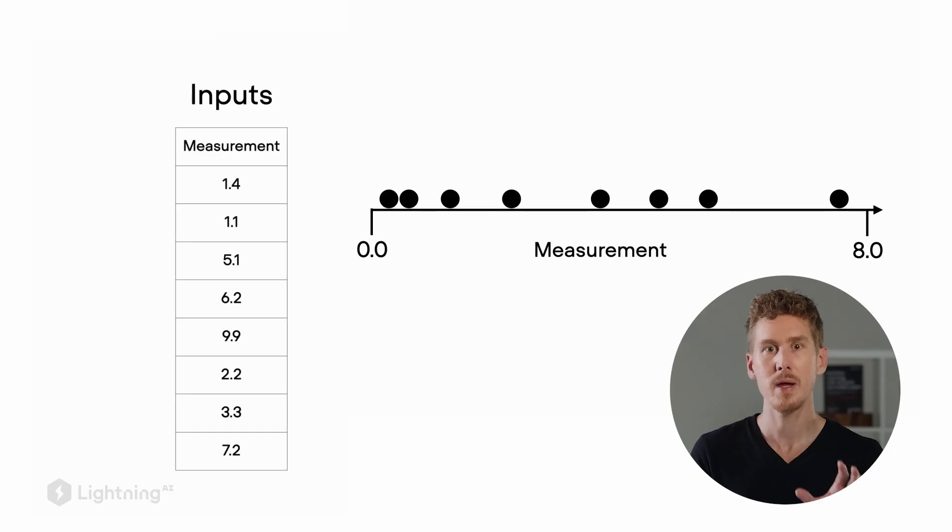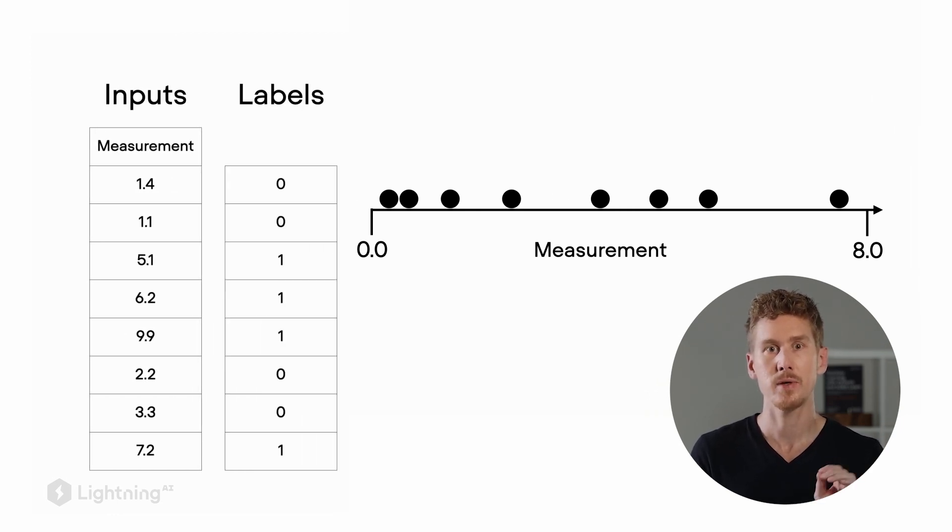So now let's return to the problem of binary classification for our feature variable here. So here we have different points labeled on this measurement axis. And now let's add the labels into the picture. So each point has a label either zero or one. And if this sounds too abstract, just think about it as spam or not spam, or cat or dog, or something like that.